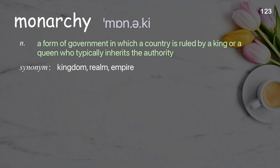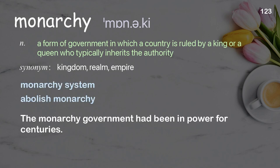Monarchy: a form of government in which a country is ruled by a king or a queen who typically inherits the authority. Examples: monarchy system, abolish monarchy. The monarchy government had been in power for centuries.